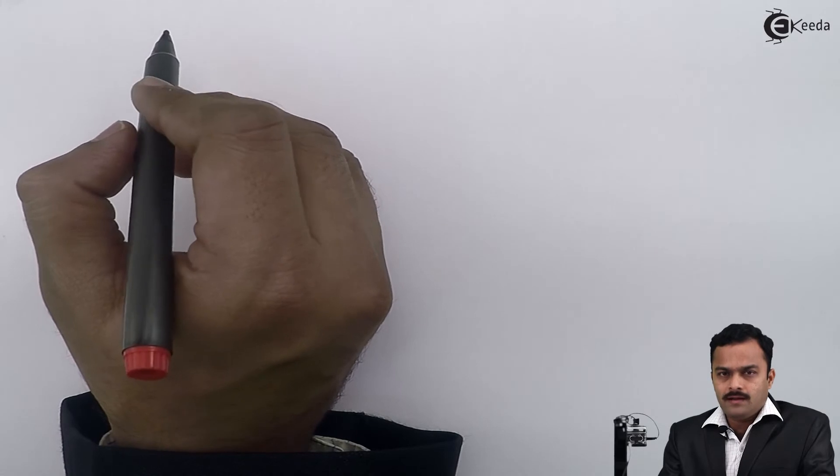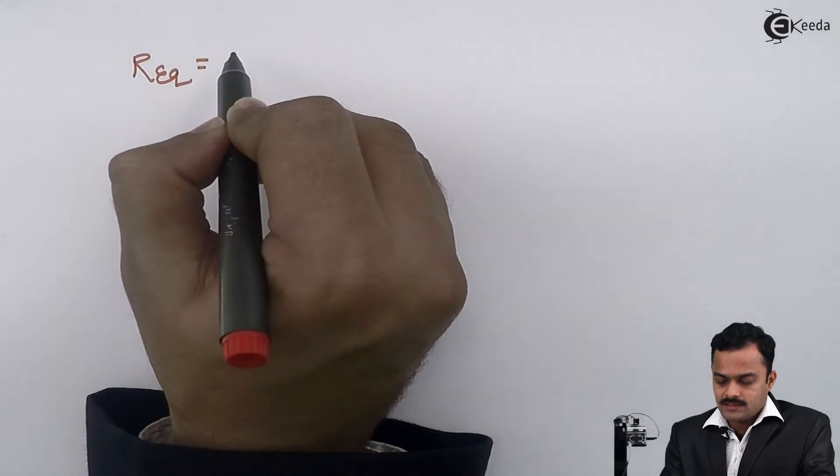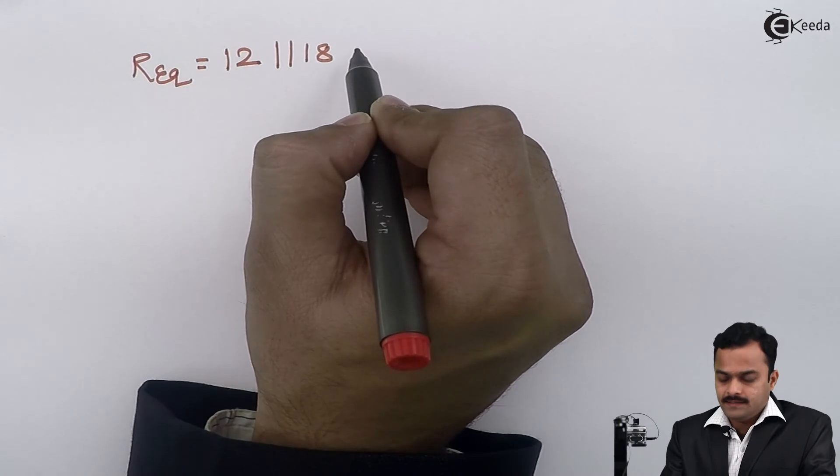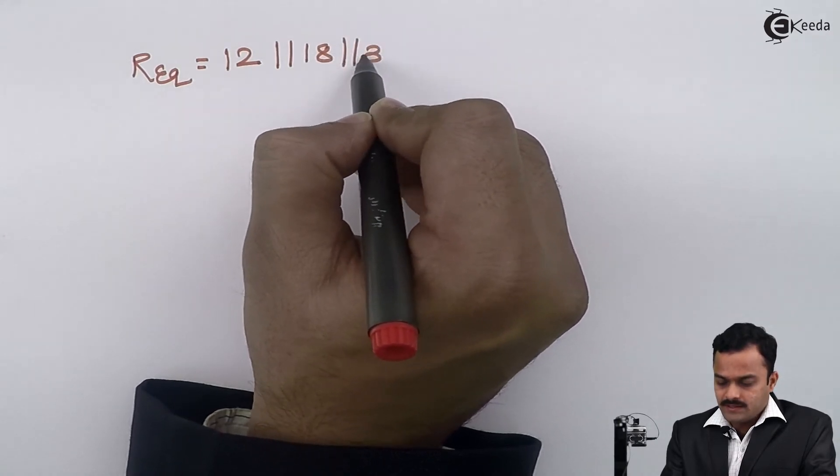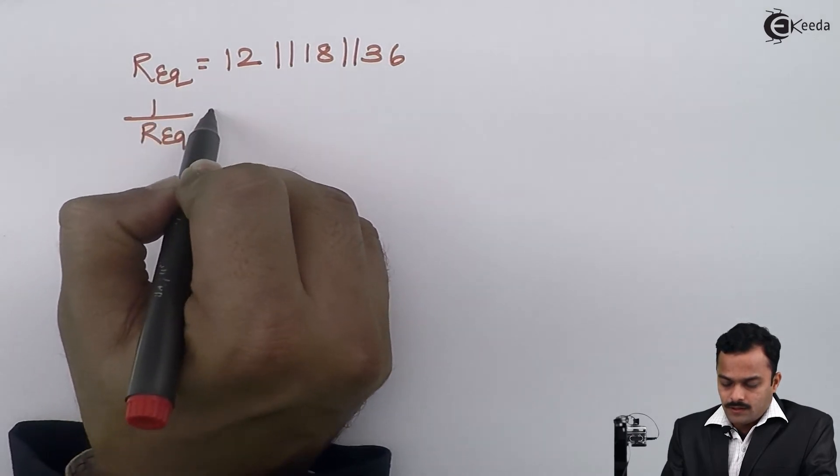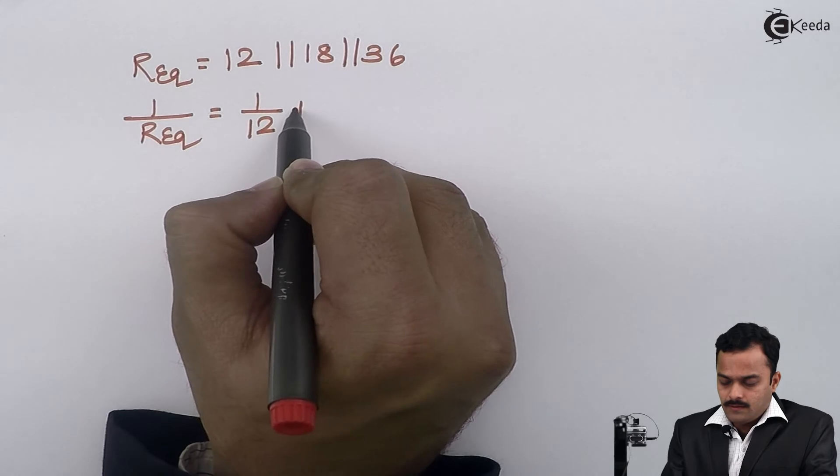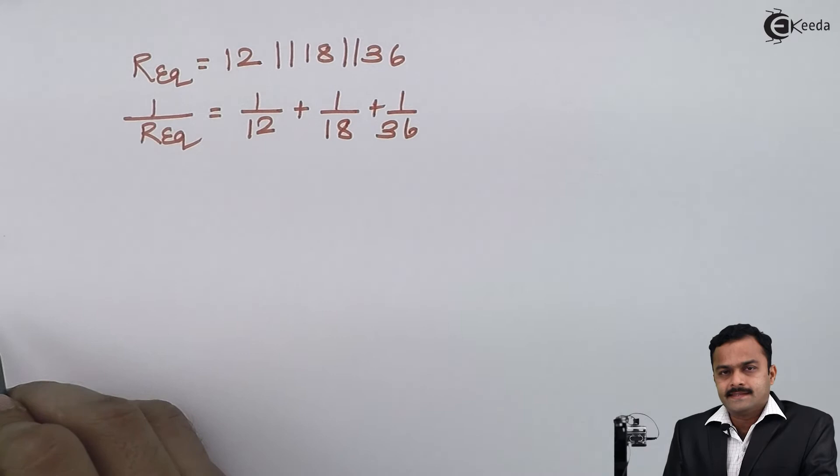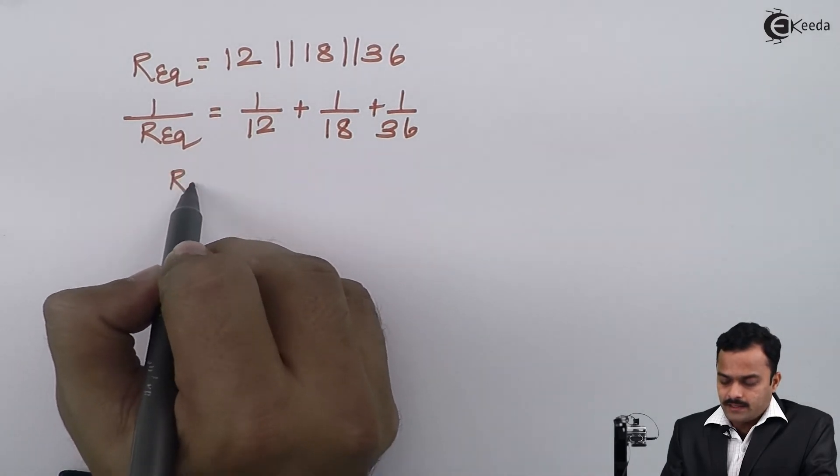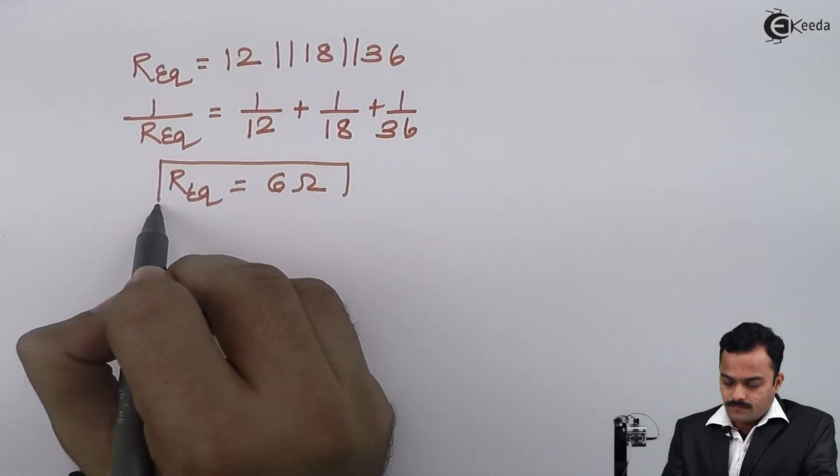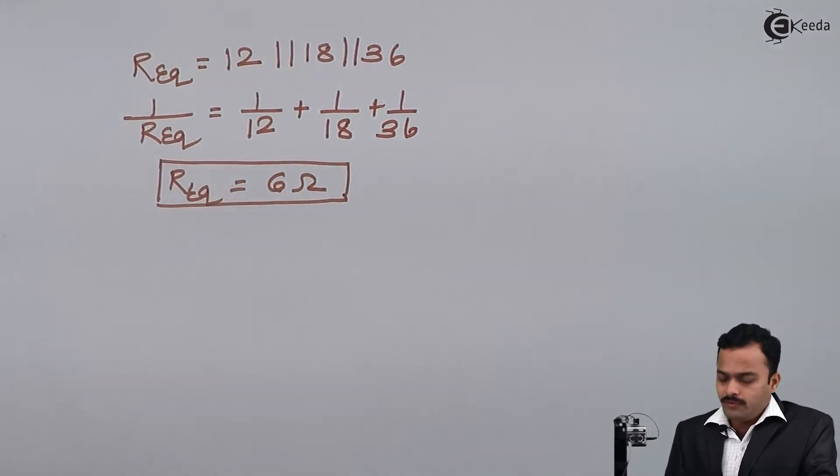I'll have the parallel combination of 12, 18, and 36 as R equivalent. I will consider it as the parallel combination of 12, 18, and 36. I could solve like this: 1/Rₑq = 1/12 + 1/18 + 1/36.